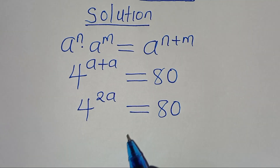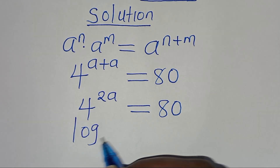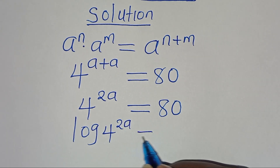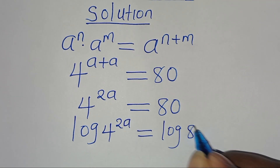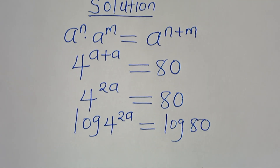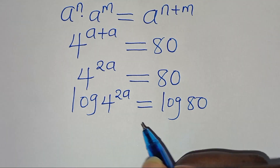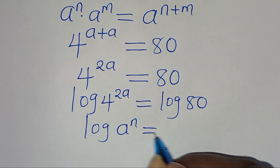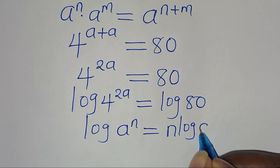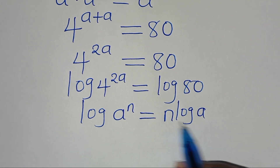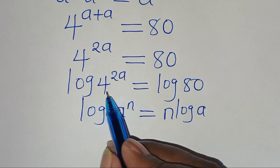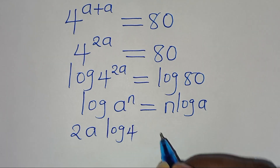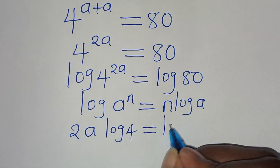Since a plus a is 2a, we have 4 to the power of 2a equals 80. To solve for a, we introduce logarithm on both sides: log of 4 to the power of 2a equals log 80. Now log 4 to the power of 2a is in the form of log a to the power of n, which we express as n·log a. Applying this power property of logarithm, we get 2a·log 4 equals log 80.